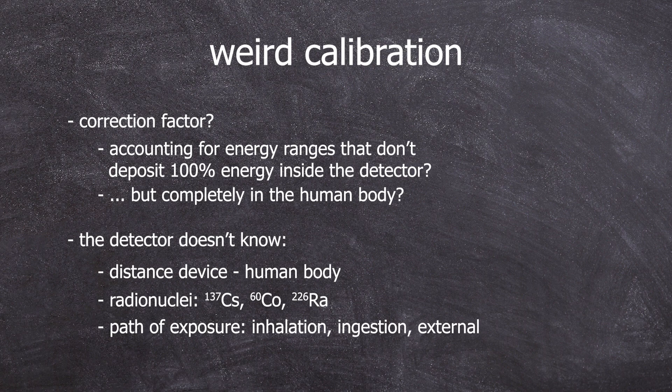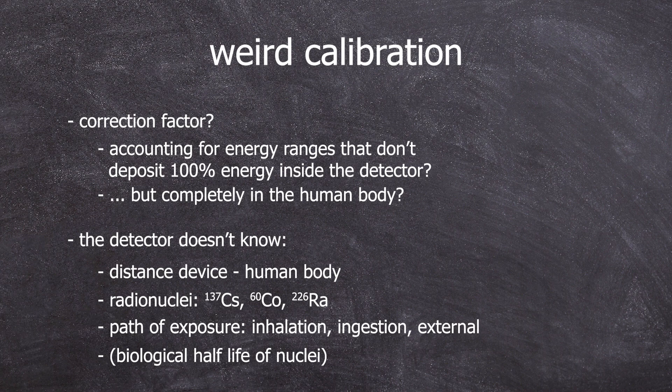Another thing that the devices cannot know is in what form are the radioactive sources? Is it radioactive dust that can be inhaled? If so, how big are the particles? Is it in a form that can be ingested? Or is it just external radiation? A dose rate meter tries to summarize all these factors with a correction factor and yes, it must be calibrated to some radionuclei and all the nuclides are then just approximations. But I don't know which radionuclei they are calibrated for.